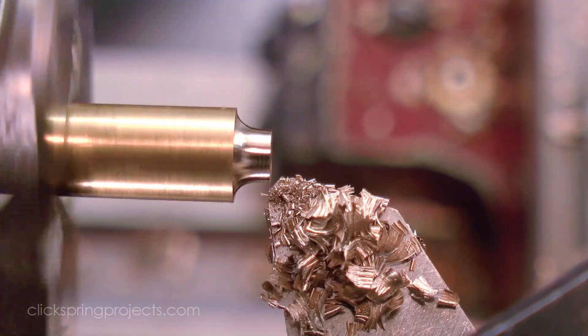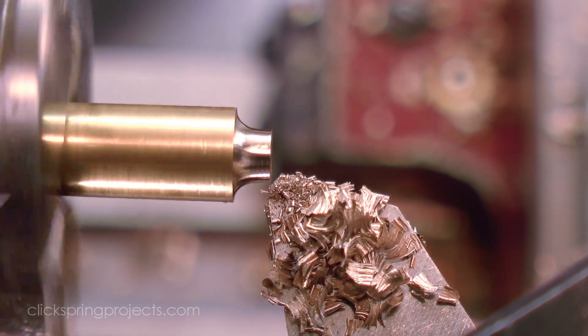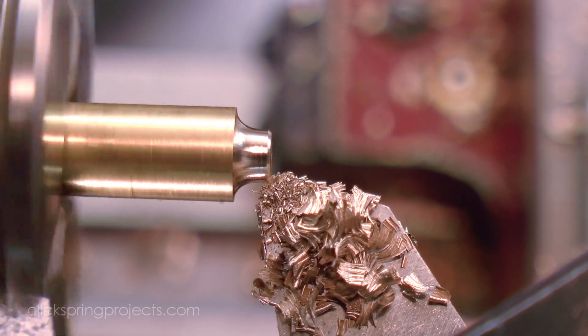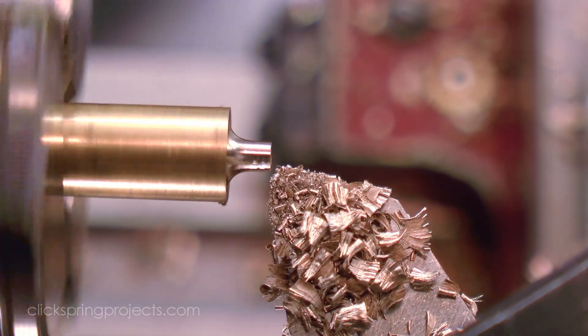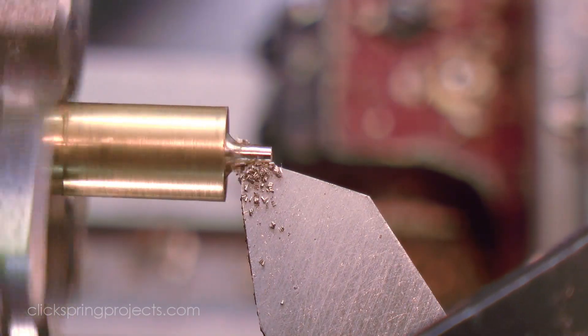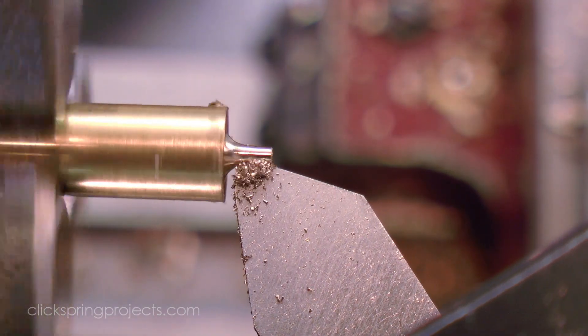This is probably the easiest part of the process in which to make an error, since I'm going past the cross slide zero indicator more than once, on my way towards the final diameter D. But with a bit of practice it's easy enough to get the form tool into the correct position, as defined by the calculator.